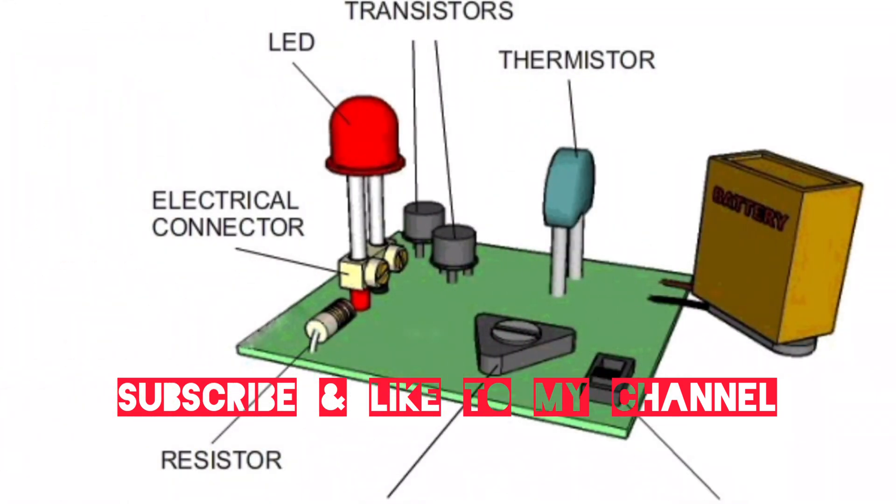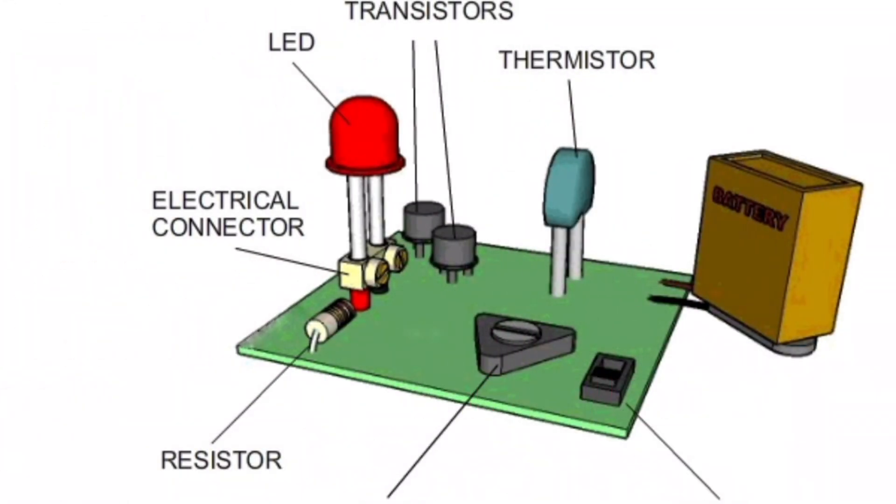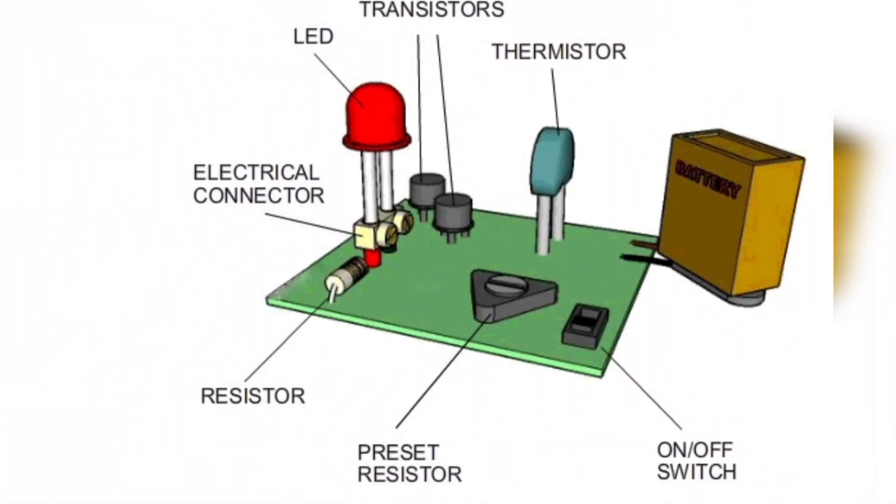Thermistor. A thermistor is made of oxides of metals such as nickel, manganese, cobalt, copper, uranium, etc.